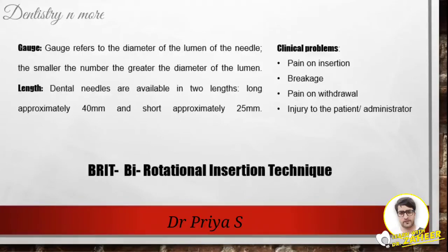Those two factors are the gauge and length of the needle. Gauge refers to the diameter of the lumen: the smaller the number, the greater the diameter. For example, a 30-gauge needle has a smaller internal diameter compared to a 25-gauge needle. Smaller diameter needles are less traumatic; the most commonly used needles in dentistry are 25, 27, and 30 gauge. Regarding length, dental needles are available in long (approximately 40 mm) and short (approximately 25 mm). Needles should not be inserted to their hub unless absolutely necessary, as the weakest portion is at the hub where needle breakage occurs. Long needles are preferred for techniques requiring penetration of significant thickness of soft tissue.